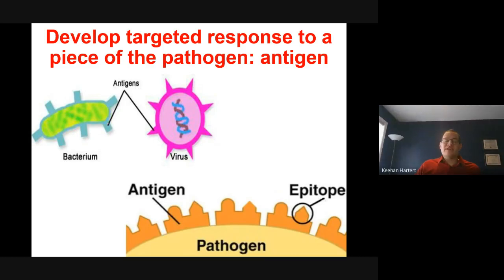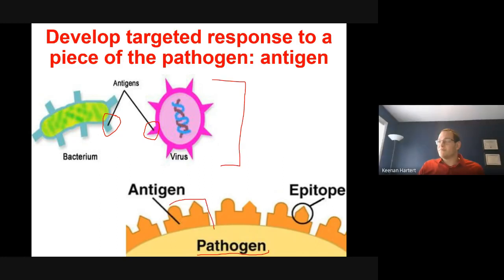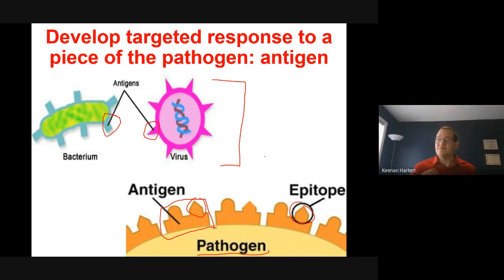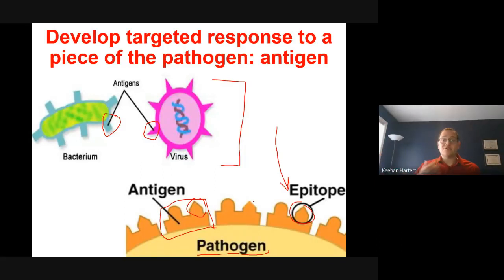Bacteria and viruses have pieces of them that do not look human, and our cells know that. We can call these antigens. In a lot of cases these are spike proteins or receptors they need to bind. Pieces of pathogen are antigen, and an epitope is just the piece of the antigen — an even more specific target. Your immune system is going to train itself to kill anything that looks like this piece, because this piece — even though it's just a small protein on the surface of a cell — is not human, and your adaptive immune system is going to evolve a cell that kills just that thing.